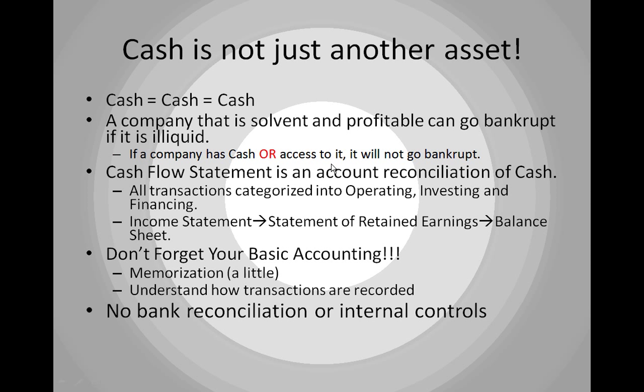To prove that cash is not just another asset, consider that even if a company is solvent and profitable, it can still go bankrupt if it loses access to cash. That's a critical point — once a company loses access to cash, the market doesn't trust its IOUs anymore, and it's in a very bad situation.